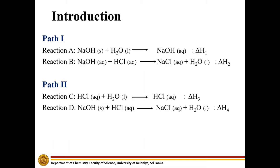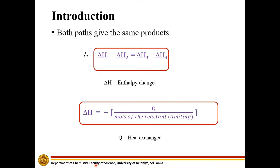In this experiment, two different paths will be used to produce the same products from the same reactants. Since both paths give the same products, according to Hess's Law, the sum of the enthalpy changes of the reactions of path 1 should be equal to the sum of the enthalpy changes of the reactions of path 2.